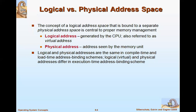Now we'll see two types of addresses used most frequently in the system: logical address and physical address. A logical address is the address generated by the CPU — the processor. During execution of a process, when you want to pick a particular instruction from memory, the address generated by the CPU is known as the logical address.